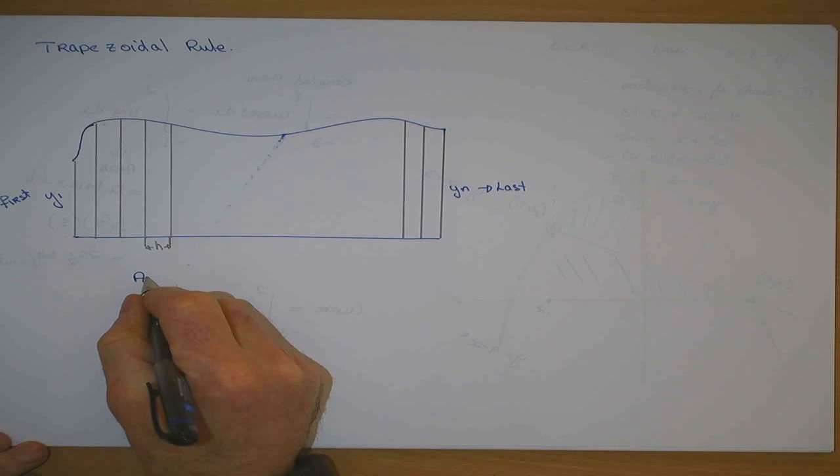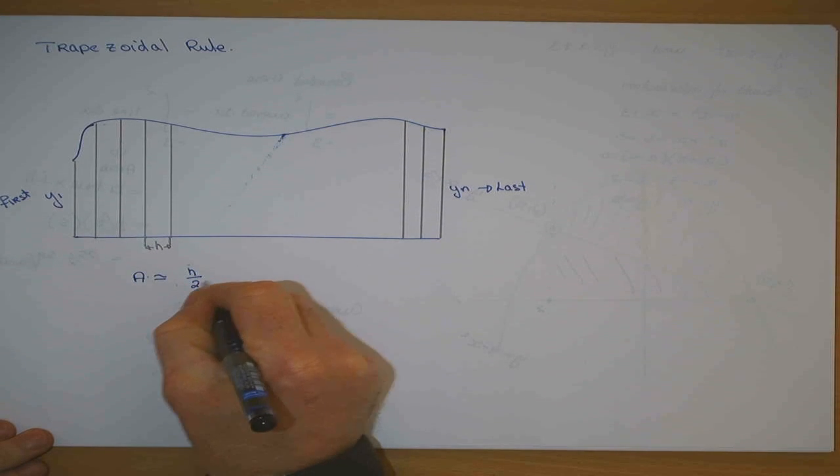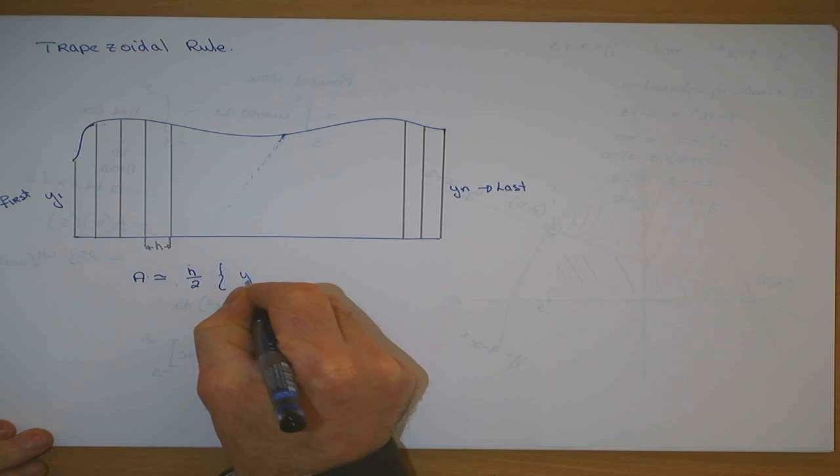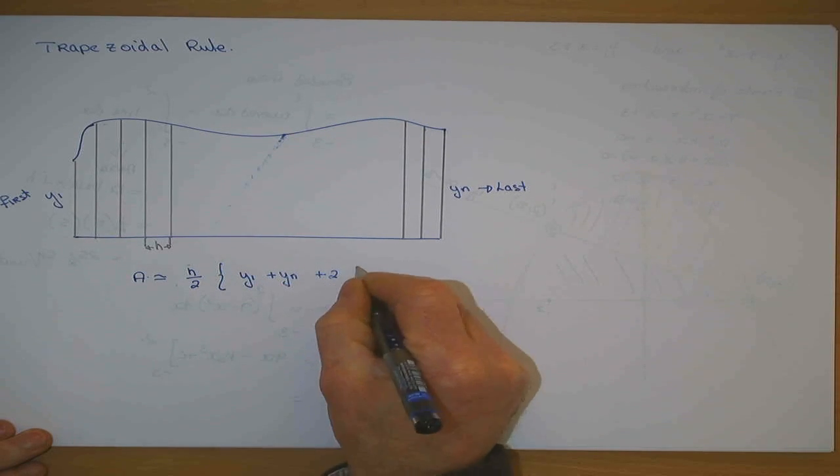And the area then is given by the formula, and that means approximately equal. It is not 100% accurate. It is equal to H over 2 times the first one plus the last one plus twice the rest of it.